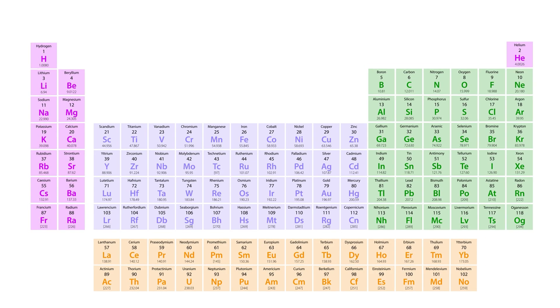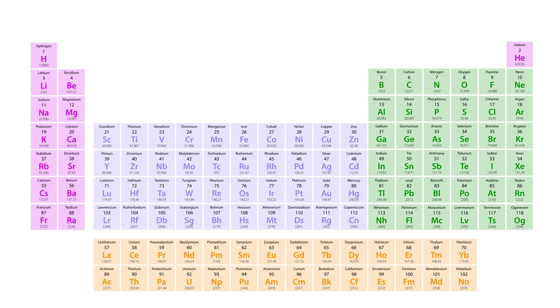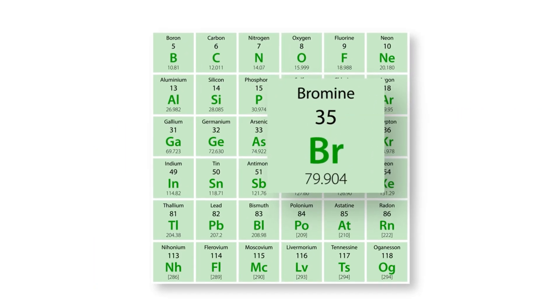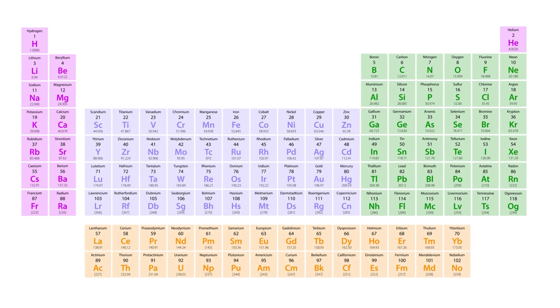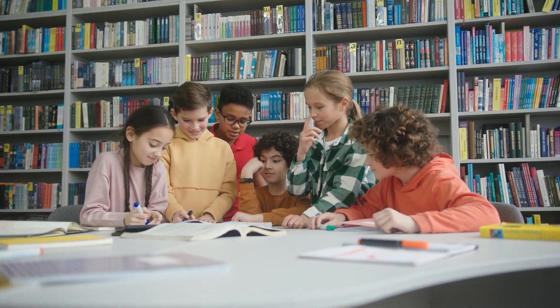Now, it is your turn to read the periodic table. Find the element bromine. What group is bromine in? What is bromine's atomic number? What is its symbol? How about its atomic weight? Is bromine a solid, a liquid, or a gas? Yep, it is a liquid. Well done, everybody.